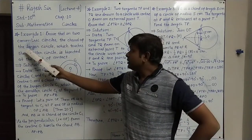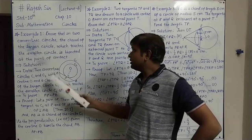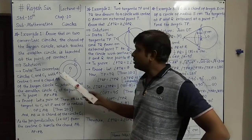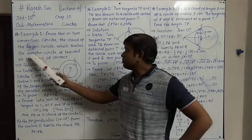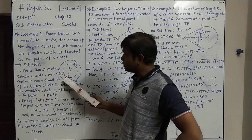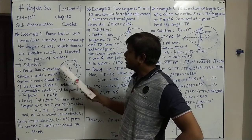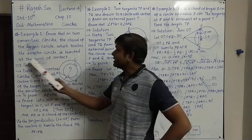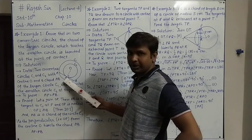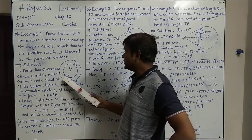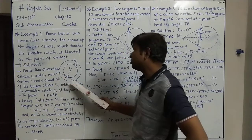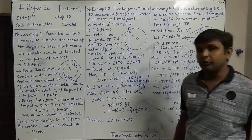The chord AB of the larger circle C1 touches the smaller circle C2 at point P, and is bisected at the point of contact. That means AB is bisected at point P, so AP equals PB.